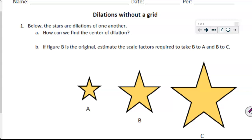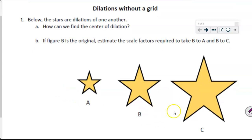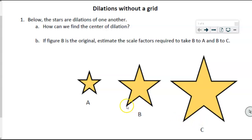To get started, we're going to find the center of dilation. We can see these three figures A, B, and C — they look like scale copies of one another, so we must have done a dilation. I want to see if I can find that center of dilation. Our process works the same as before: I can see corresponding points — the top part of the star, the bottom left-hand point of the star — those are all corresponding points, so I want to see where they line up.